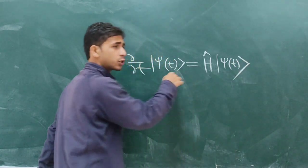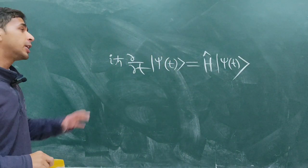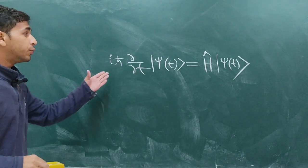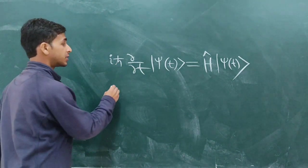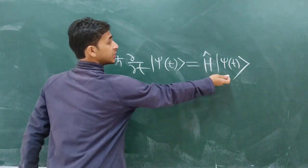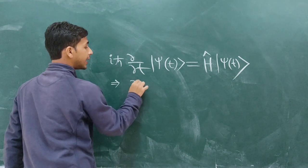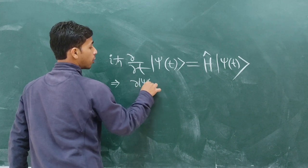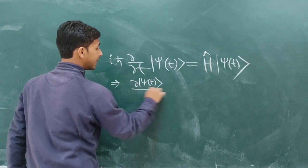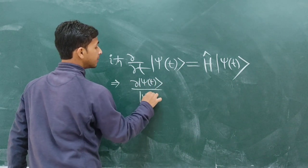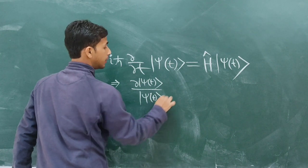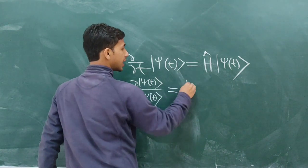So this is Schrödinger's time-dependent equation. And if you make some rearrangements, let's take this ψ(t) to this hand side and you will get ∂ψ(t)/ψ(t) equals Ĥ.